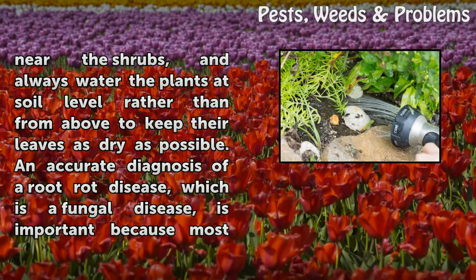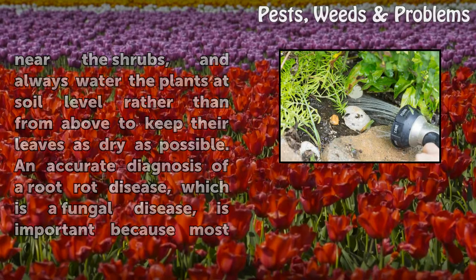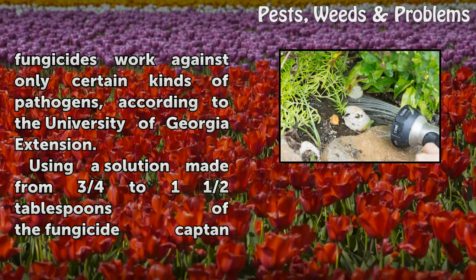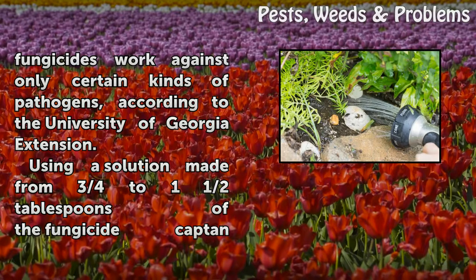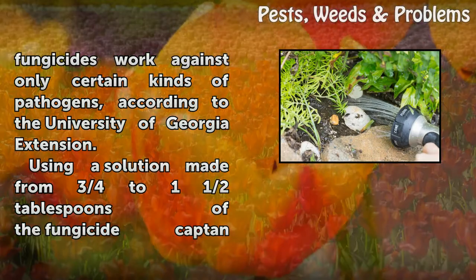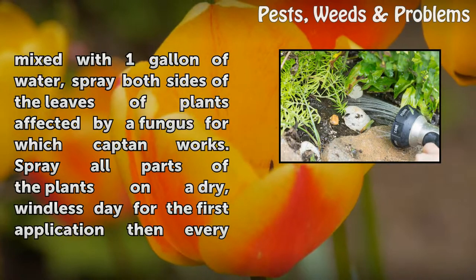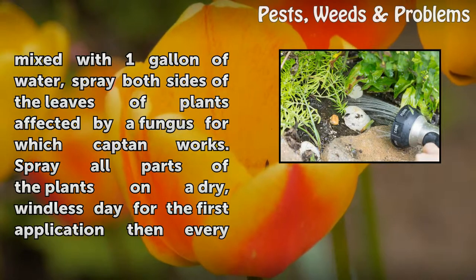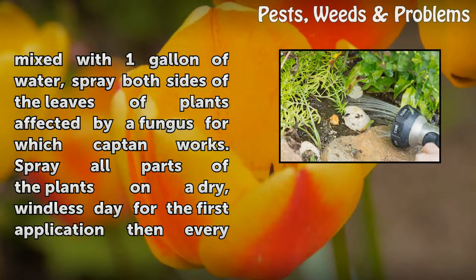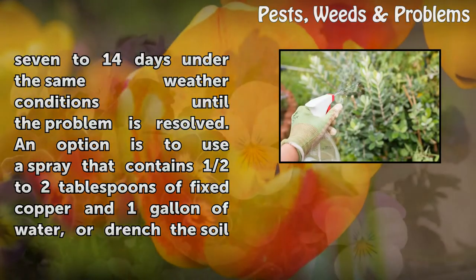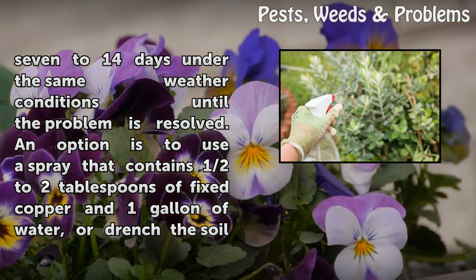An accurate diagnosis of a root rot disease, which is a fungal disease, is important because most fungicides work against only certain kinds of pathogens, according to the University of Georgia Extension. Using a solution made from three-quarters to one and a half tablespoons of the fungicide captan mixed with one gallon of water, spray both sides of the leaves of plants affected by a fungus for which captan works. Spray all parts of the plants on a dry, windless day for the first application, then every seven to fourteen days under the same weather conditions until the problem is resolved.